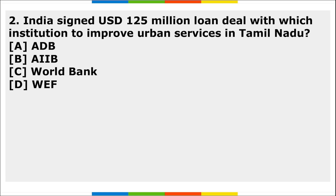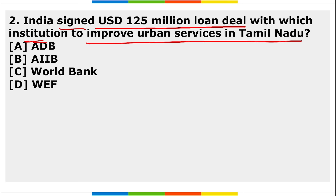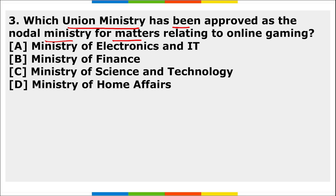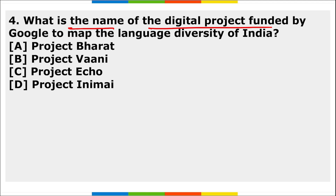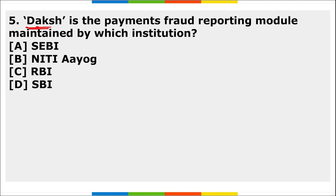Homework questions: First, which institution has been named as the G20 Science Working Group's secretariat? Second, India signed a $125 million deal with which institution to improve urban services in Tamil Nadu? Third, which union ministry has been approved as the nodal ministry for matters relating to online gaming? Fourth, what is the name of the digital project funded by Google to map the language diversity of India? Fifth, DAKSH is the payments fraud reporting module maintained by which institution?